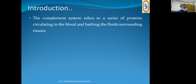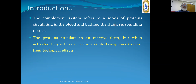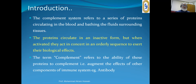Introduction: Complement system refers to a series of proteins circulating in the blood and bathing the fluids and tissues. These proteins circulate in an inactive form — the antibodies are also active in an inactive form — but when activated, they act in concert and in an orderly sequence to exert their biological effects. The term 'complement' refers to the ability of these proteins to complement, that is, augment the effects of other components of the immune system, that is, antibody.